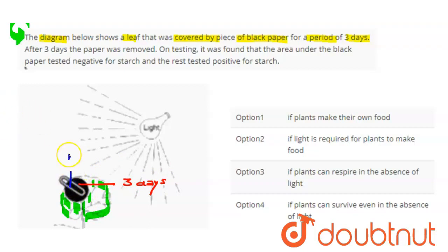you can test this area under the black paper. Here you can see the area under the black paper is negative for starch, and the rest of the leaf is positive for starch.